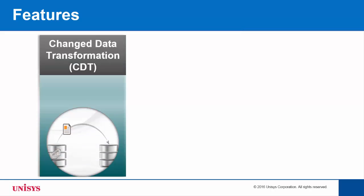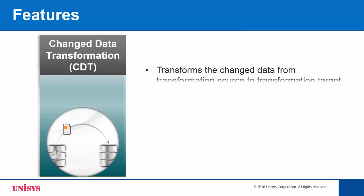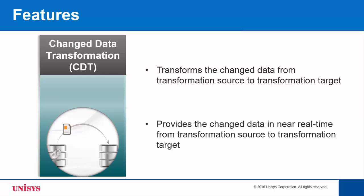Changed Data Transformation, also known as CDT, transforms the changed data from a transformation source to a transformation target based on the transformation definition. This is an ongoing process that provides the changed data in near real-time from the transformation source to the transformation target.